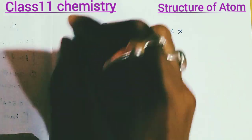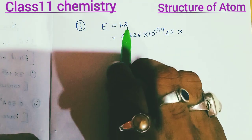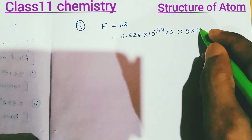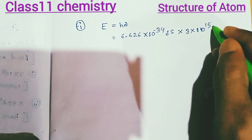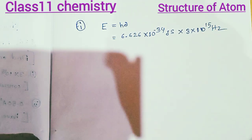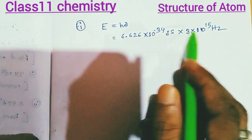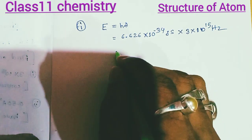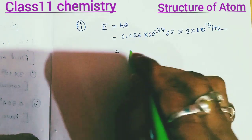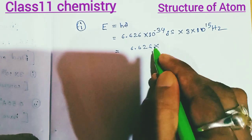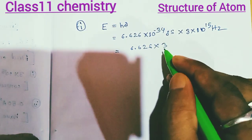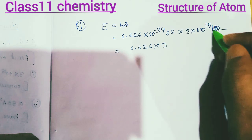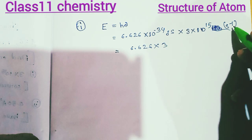For the frequency component, the frequency is 3 into 10 to the power 15 Hertz. We will convert the energy — 6.626 into 3. Hertz means cycles per second, which means second minus one.